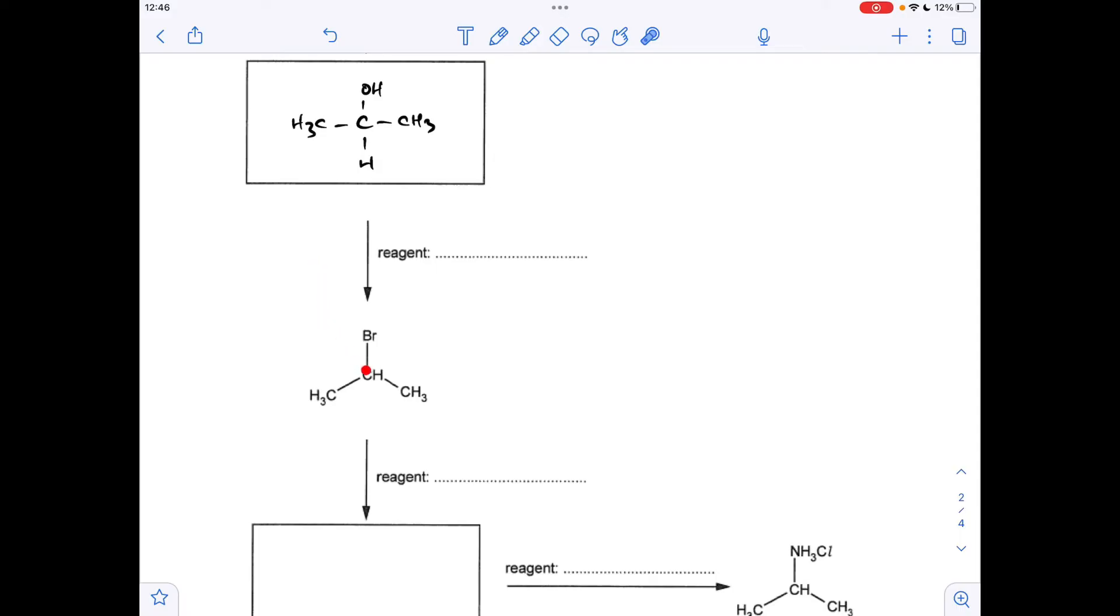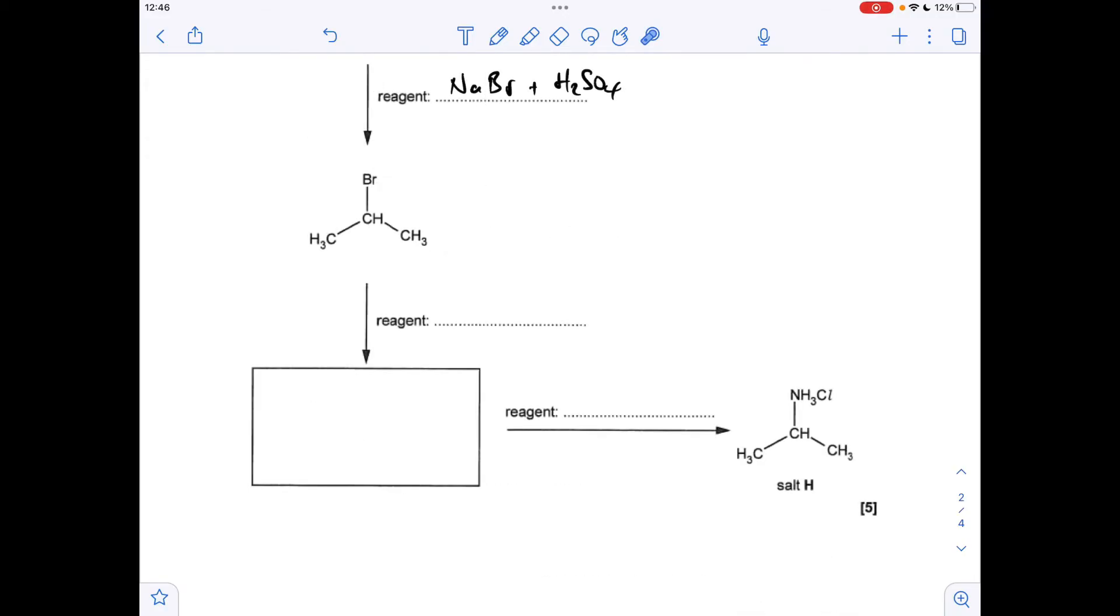So how do you go from this to this? How do you turn an alcohol into a haloalkane? You react it with sodium bromide, in this case because we're putting bromine on, sodium bromide and sulfuric acid. And for the rest of the flow chart we've got to focus on salt H here. So what needs to be in this box? Well we need an NH2 group. We need to generate an amine here. There's the structure of the amine there.